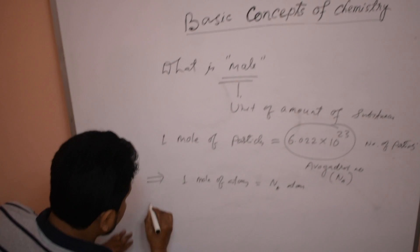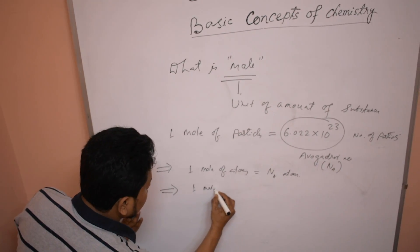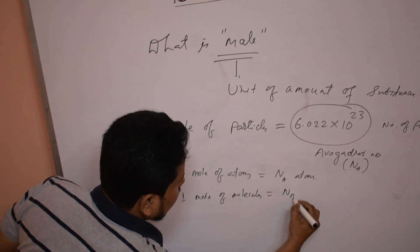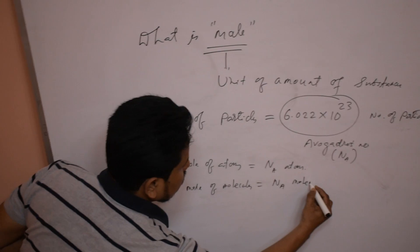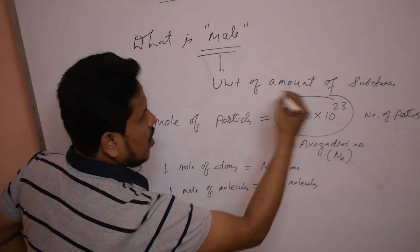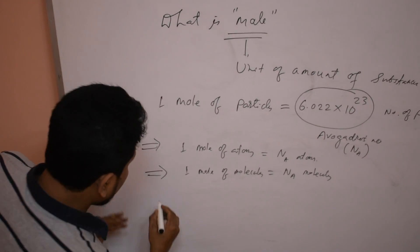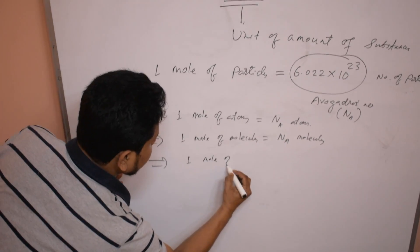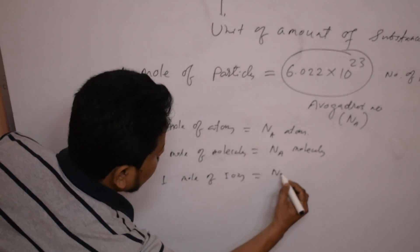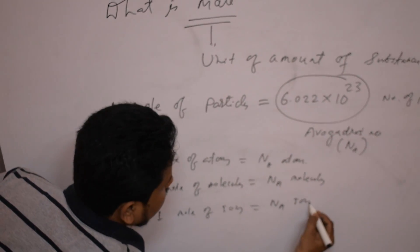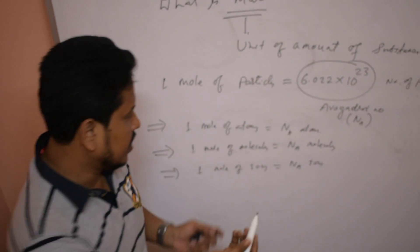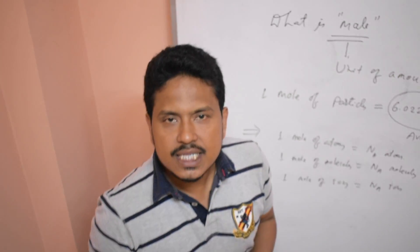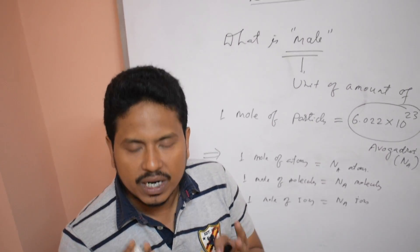Similarly, one mole of molecules means the same Avogadro's number of molecules. This number of molecules is one mole of molecules. It may also be one mole of ions — that means Avogadro's number of ions. One mole of atoms means Avogadro's number of atoms.